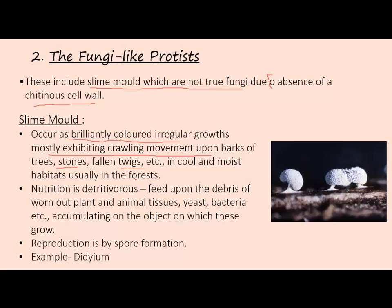Nutrition in slime molds is detritivorous, meaning they feed upon the debris of worn-out plant and animal tissues, yeast, bacteria, etc., accumulating on the objects on which they grow. Reproduction is by spore formation.